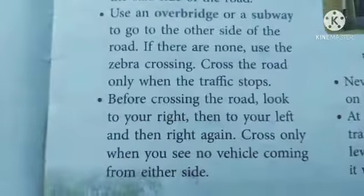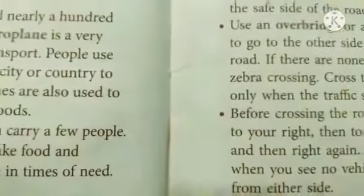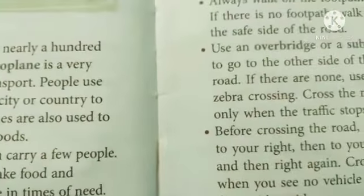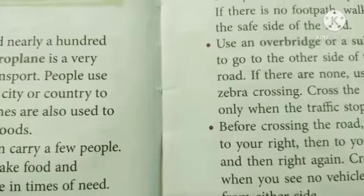We learned about three types of transport: land, water, and air, along with the road safety rules we must follow. Just read the lesson and learn these things. Thank you, children.